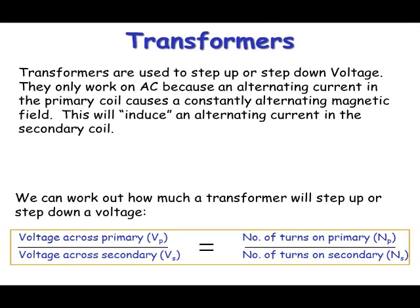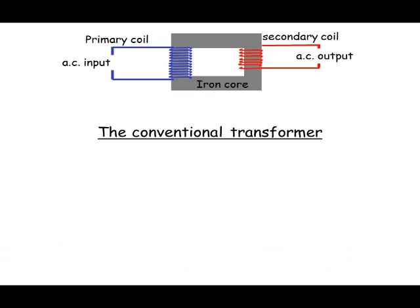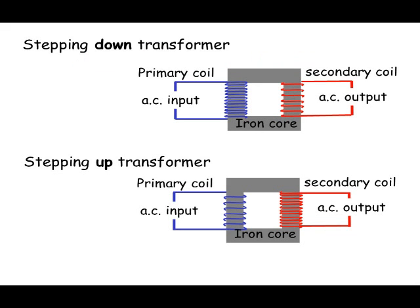I think the best way to explain this is with examples. So here's a conventional transformer. Let's just have a look at the top here. You can see a step down transformer has more turns on the primary than on the secondary, and a step up has more turns on the secondary coil than on the primary.